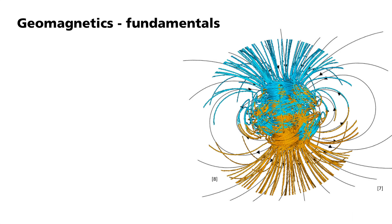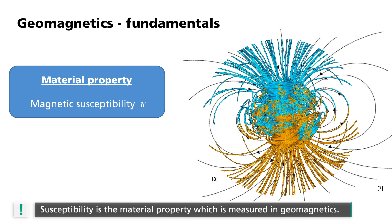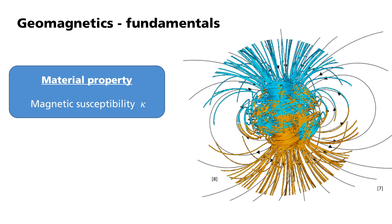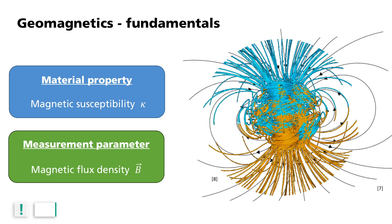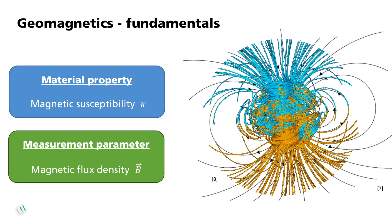The magnetizability of a body is defined by its magnetic susceptibility. This is a dimensionless measure and can vary from minus 1 to infinity. The susceptibility Kappa is the material property which is measured in geomagnetics. However, one cannot directly measure this susceptibility. Instead, one measures variations in the earth's magnetic field. The size of the field is the magnetic flux density B, which is the parameter measured in geomagnetics. Using models, one can derive the distribution of magnetized bodies in a subsurface from this.